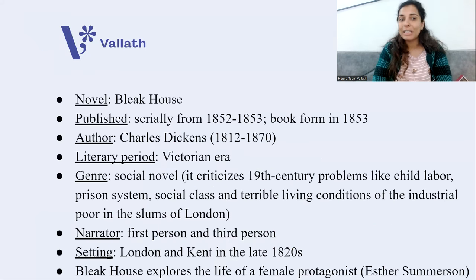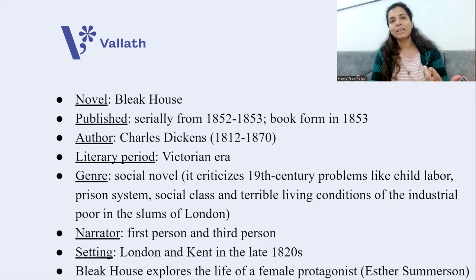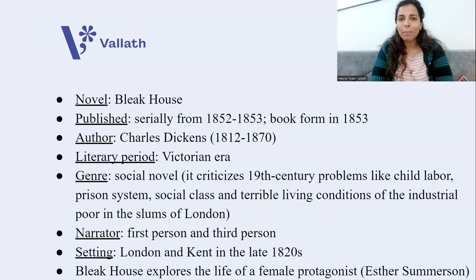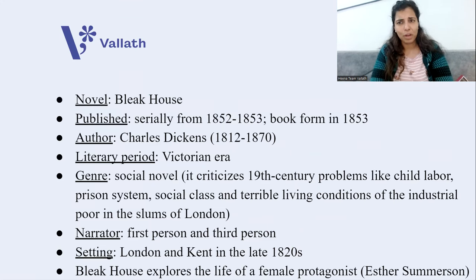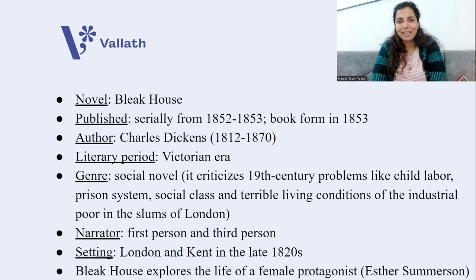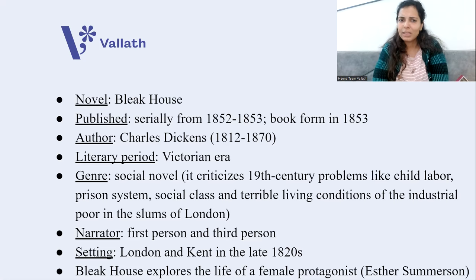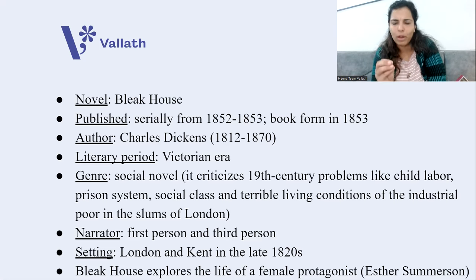Today's novel of discussion is Bleak House, published serially — as Charles Dickens' novels usually were, in episode form — from 1852 to 1853, and in book form in 1853. The author is the greatest Victorian novelist, Charles Dickens, who lived from 1812 to 1870. The literary period is of course the Victorian era, and the genre of Bleak House is that of a social novel.